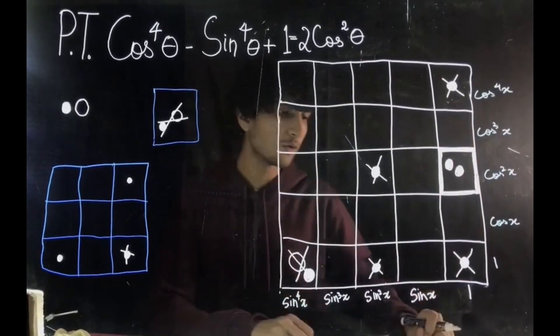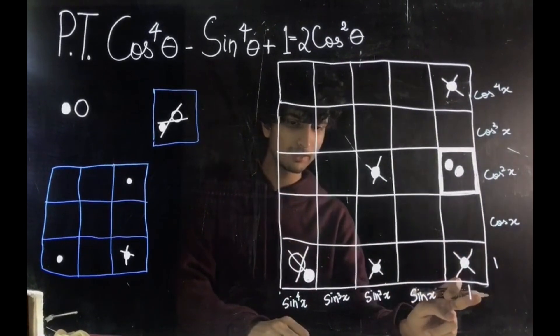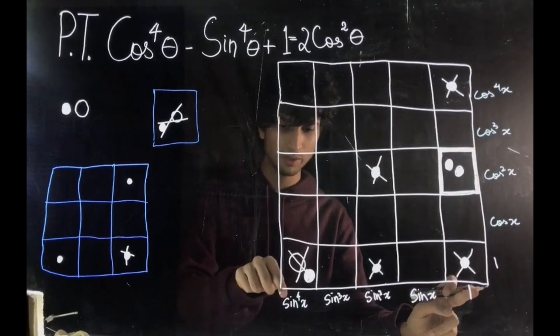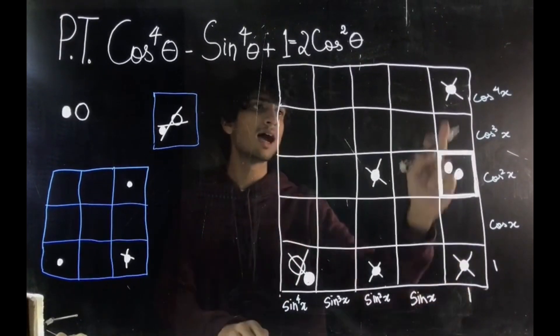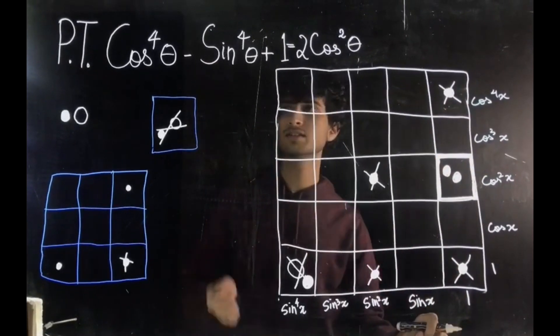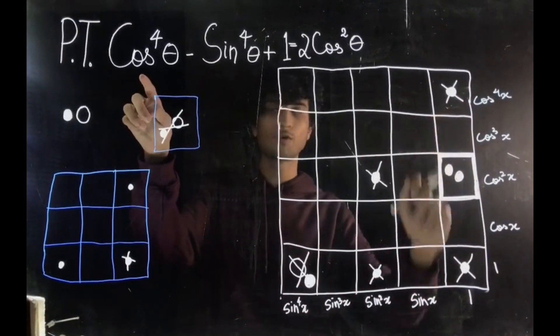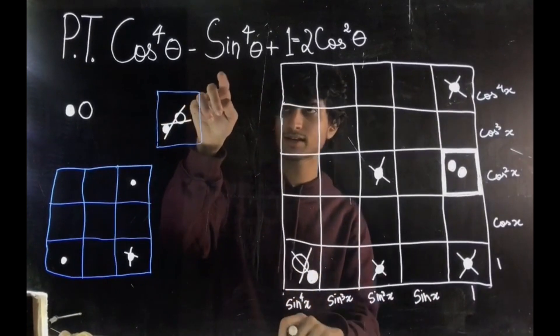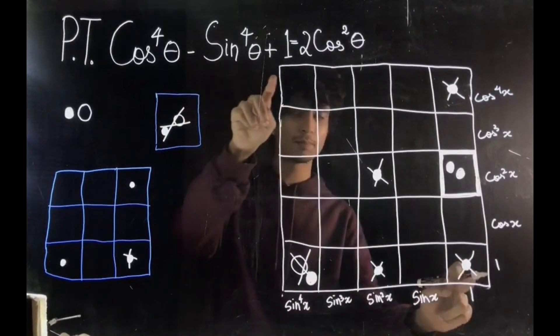So if you remember, we started out with a dot in the ones place, an anti-dot where sin to the power 4 x is, and a dot where cos to the power 4 x is. So essentially, that gave us the equation: cos to the power 4 theta minus sin to the power 4 theta plus 1.